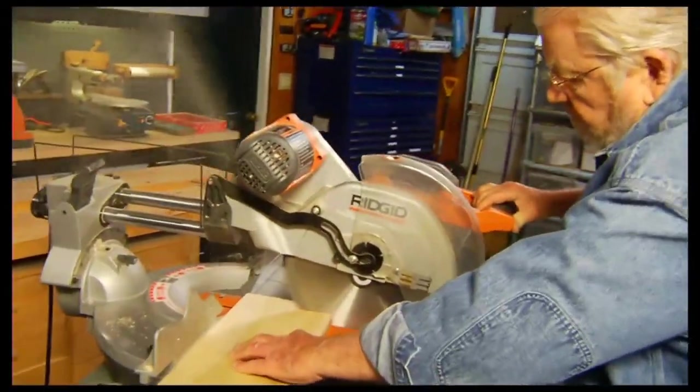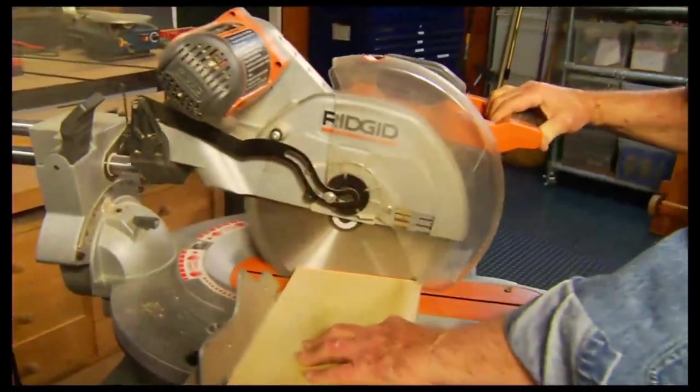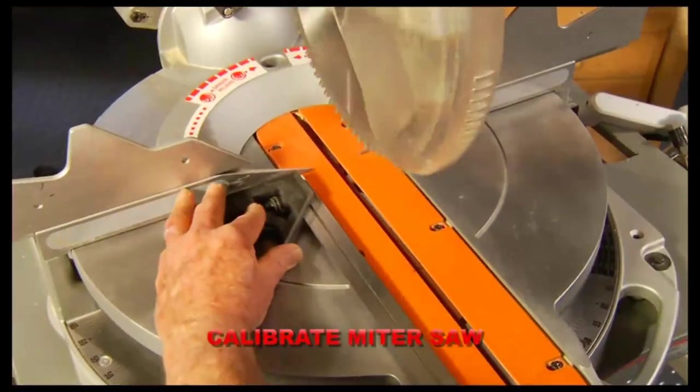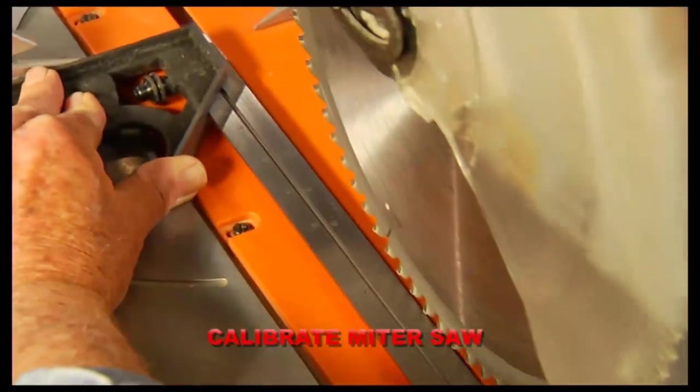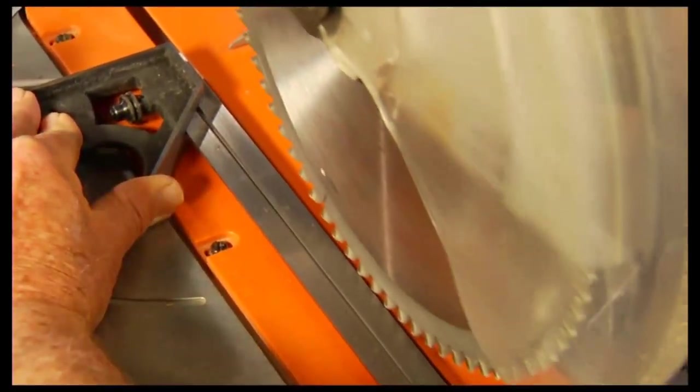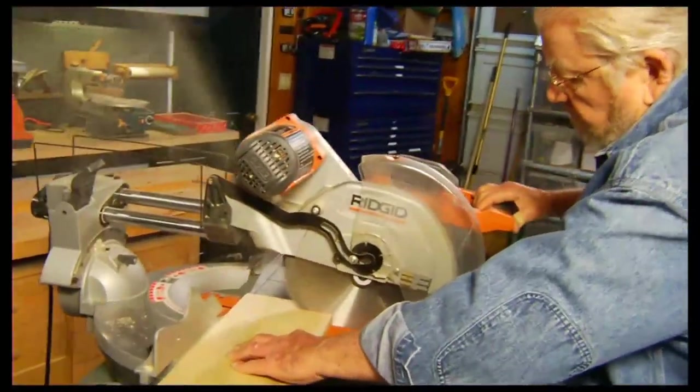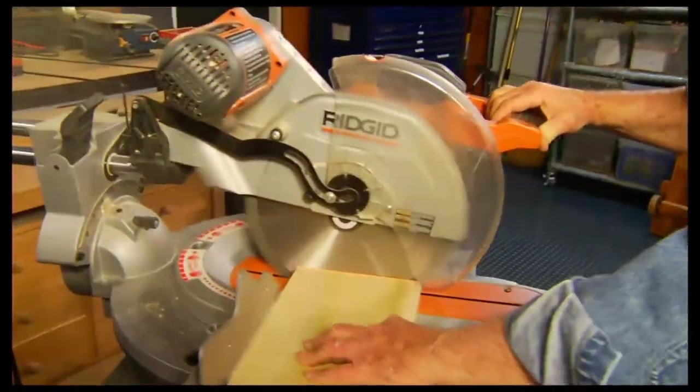Power miter saws are great work and time savers. However, they can go out of calibration, producing cross cuts that are not precisely 90 degrees. The combination square can be used to verify and, if necessary, recalibrate the saw and to check the resulting cut.